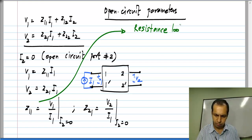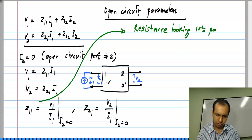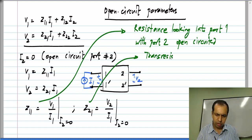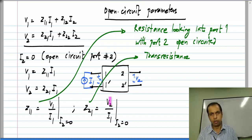So, the trans resistance means that it is the ratio of voltage to current. So, it has dimensions of resistance, but the voltage and current are not measured at the same place. The current is applied to port 1 and the voltage is measured at port 2.